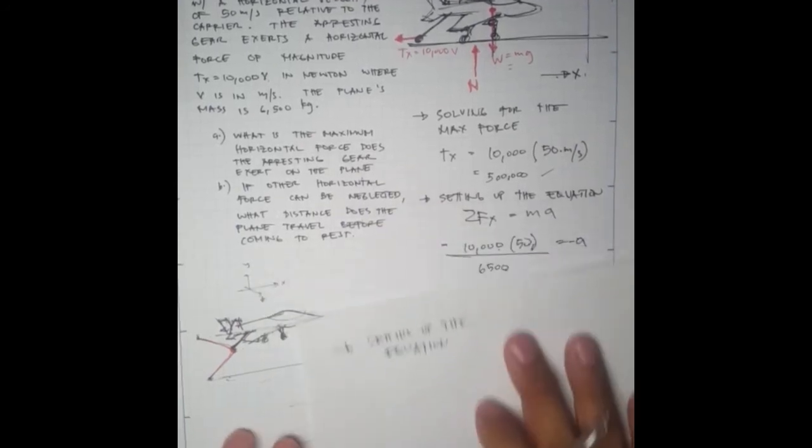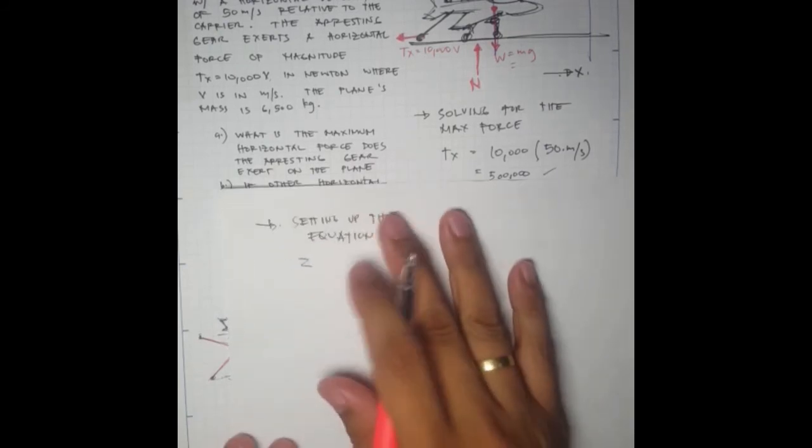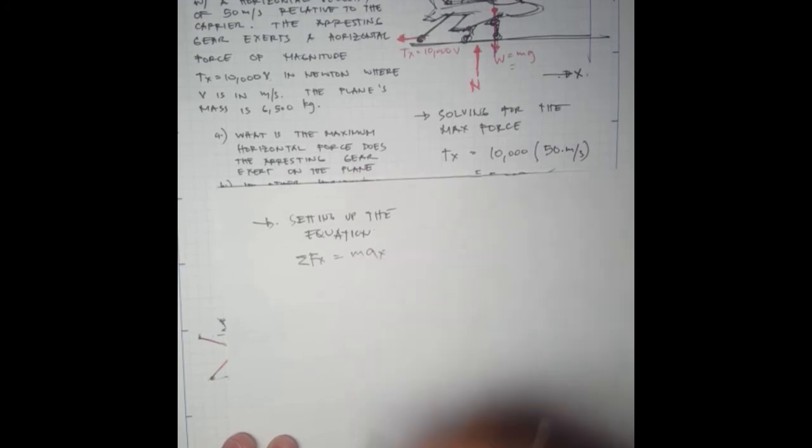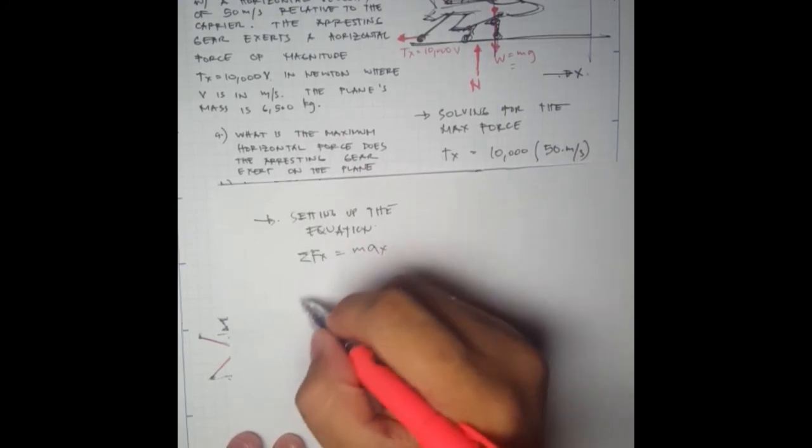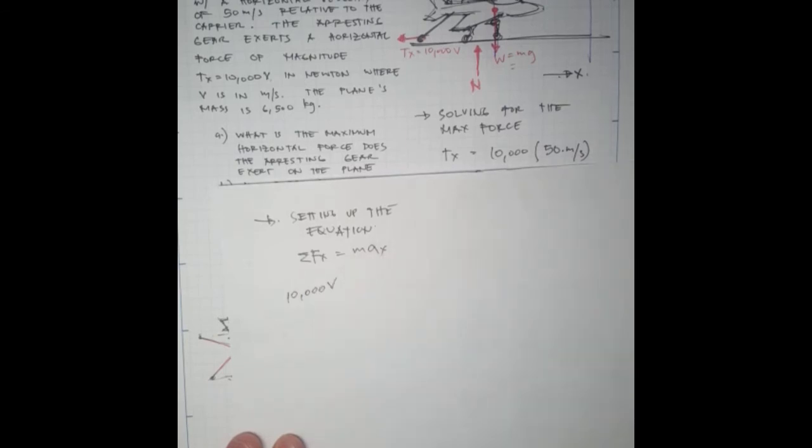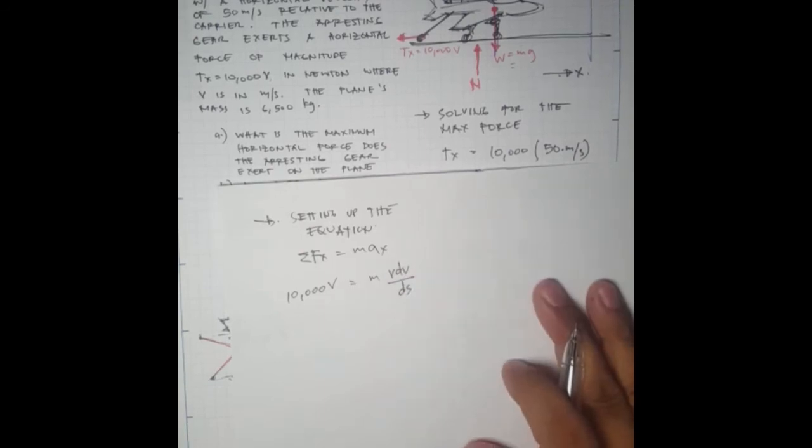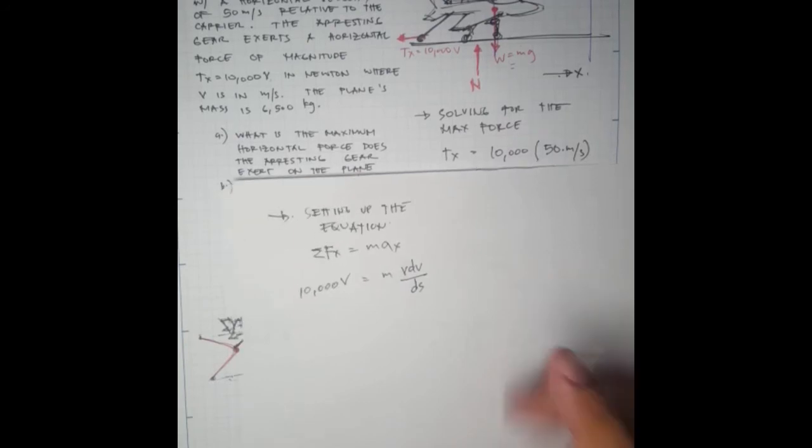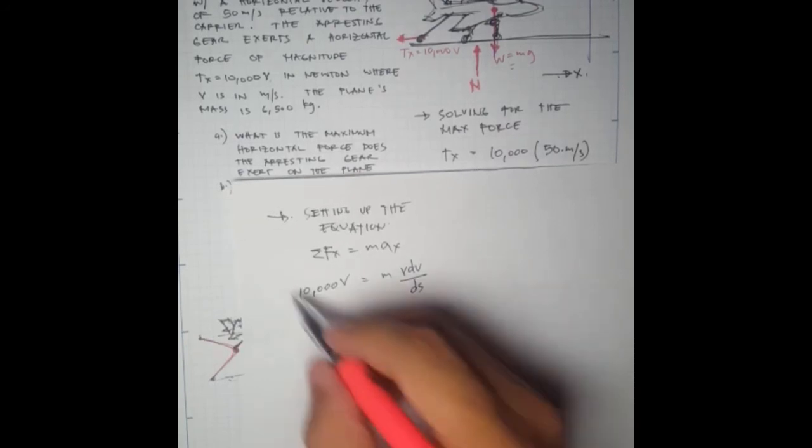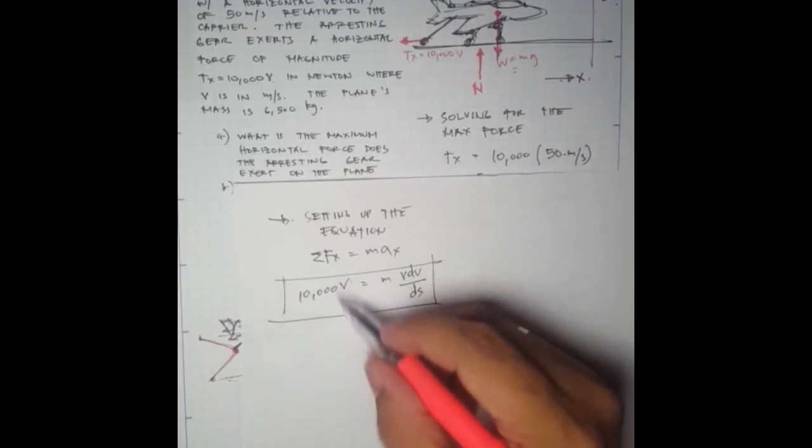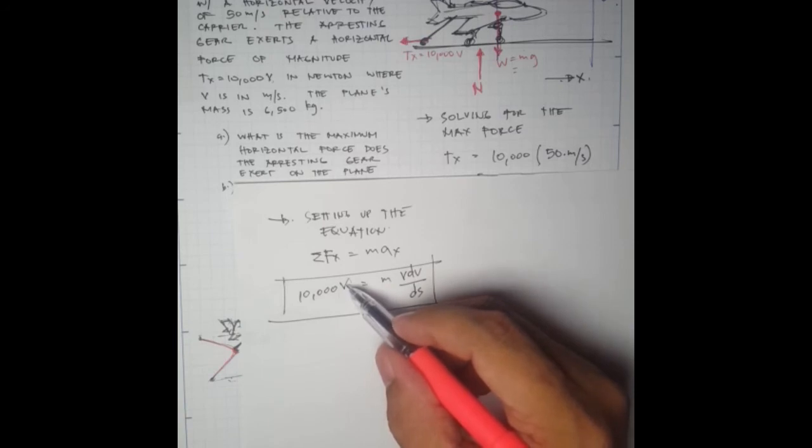We have the summation of forces in the x direction equal to mass times acceleration in the x direction. We have negative 10,000 velocity equals m times v dv over ds. This is our governing equation. Note we didn't substitute the velocity to obtain the maximum force yet.